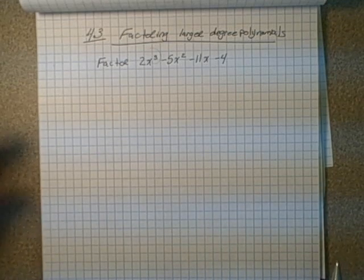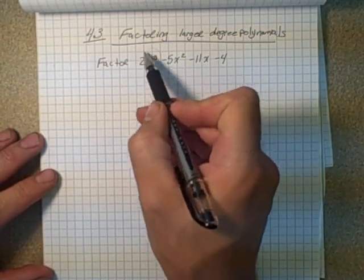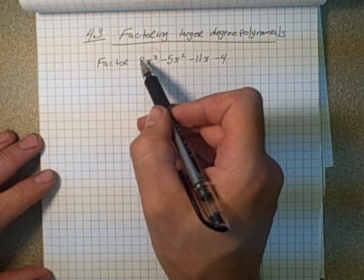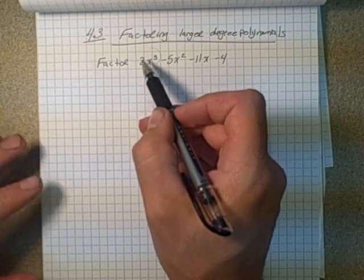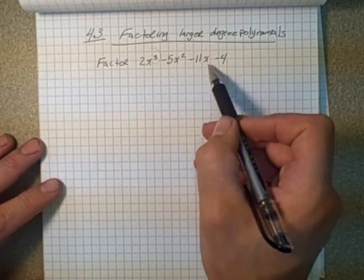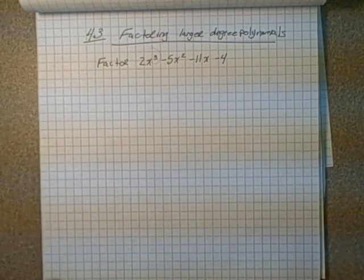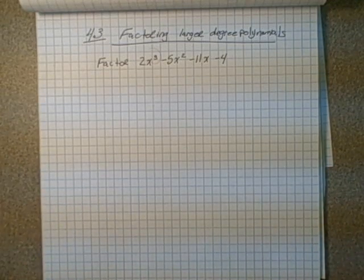Then you make a list of factors. Now how do you make a list of factors? You look at all the factors of the first term, and that's going to be the factors that go with the x in the binomial. And you look at the factors of the last term, and that's going to be the factors of the single number that goes in the binomials, so x minus 1, x minus 2, or whatever.